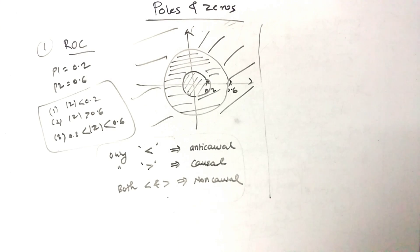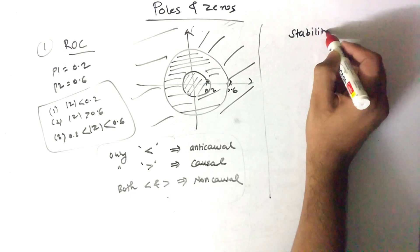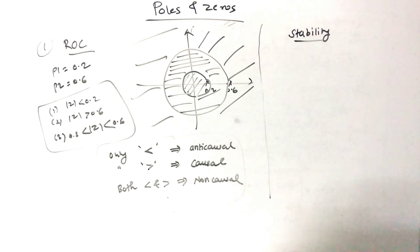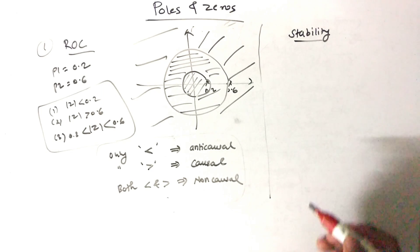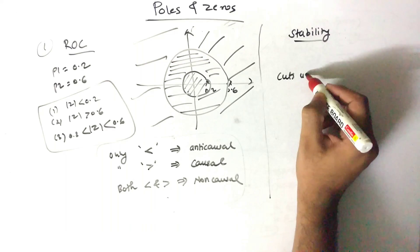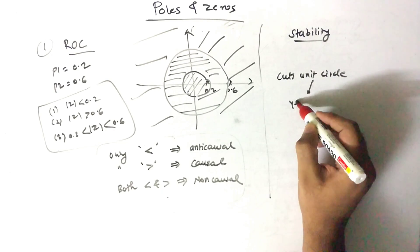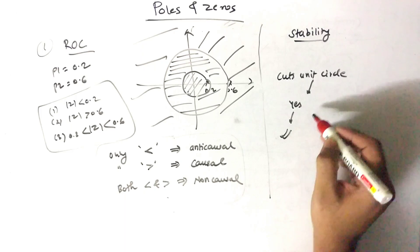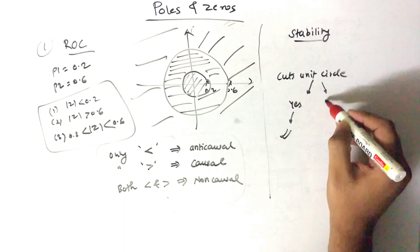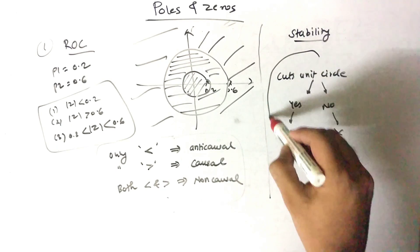Let's talk about stability. To check whether a system is stable or not in a given region of convergence, you have to check whether that region cuts the unit circle. If yes, the system is stable. If no, the system is not stable.